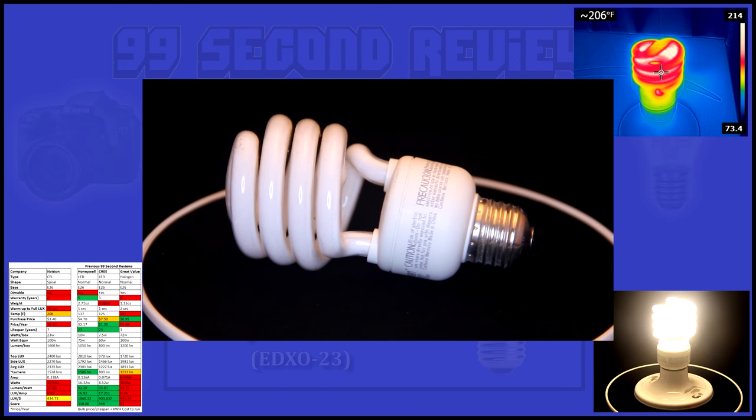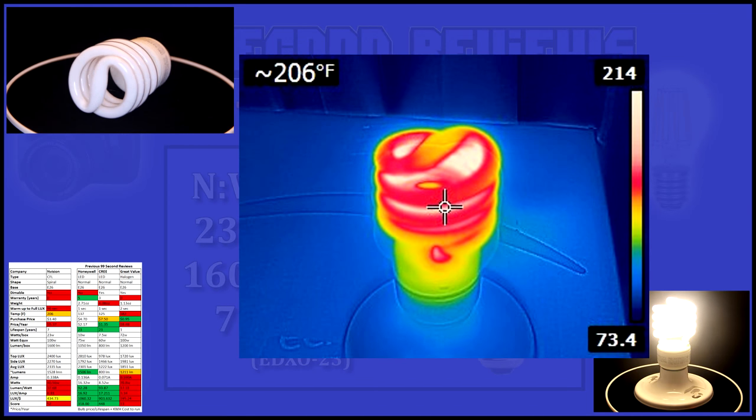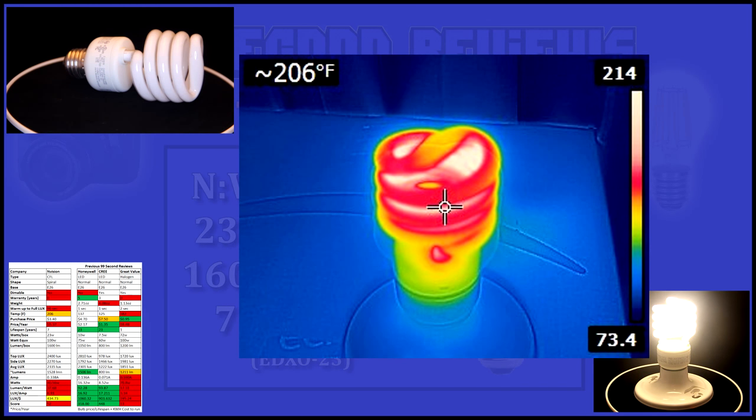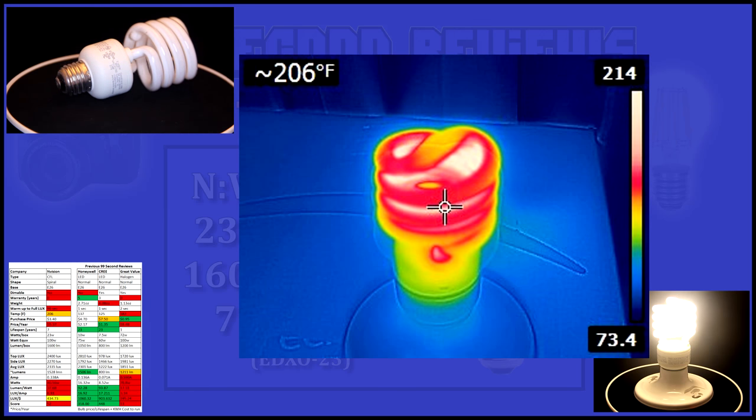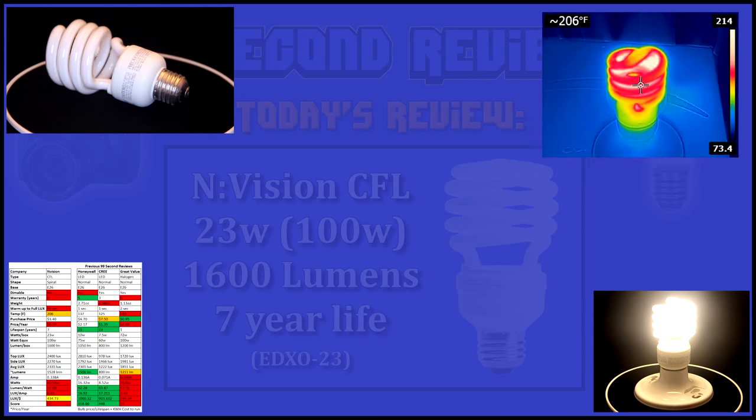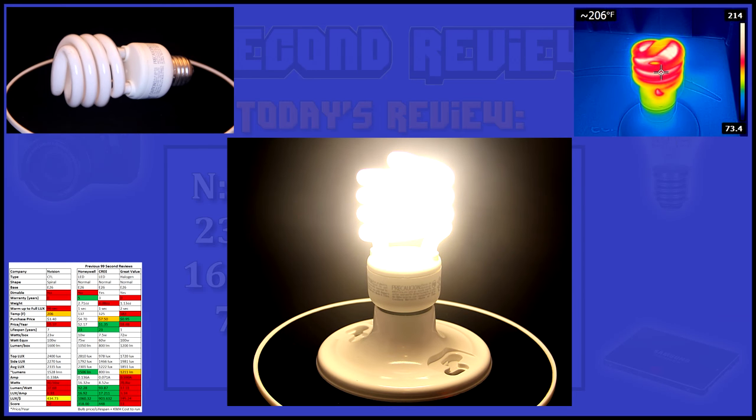The thermals on this bulb were a little high at 206 degrees. That's a little too hot to touch, but still better than all the incandescent and halogen bulbs we've tested. This 100-watt equivalent bulb puts out bright warm light.